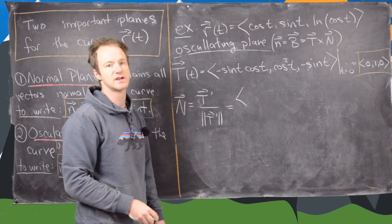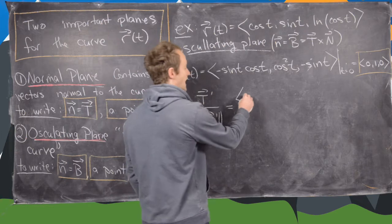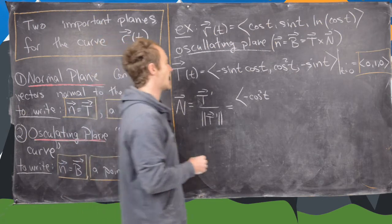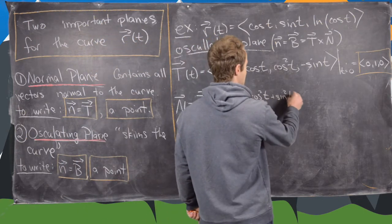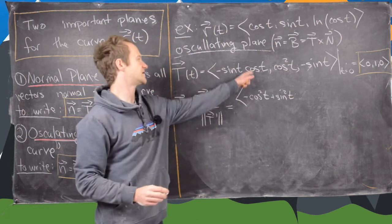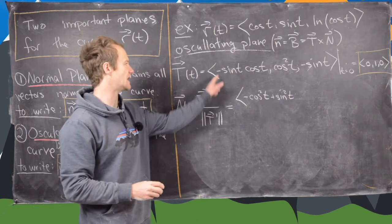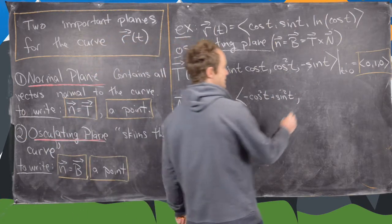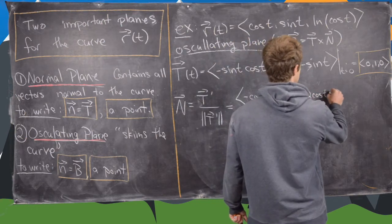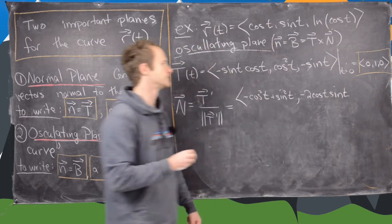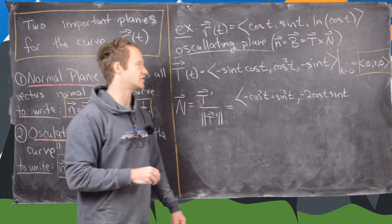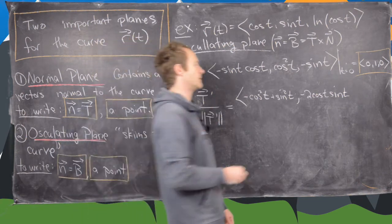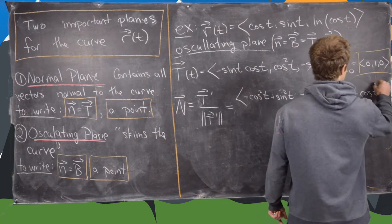Using the product rule on the first component, we get minus cosine squared t plus sine squared t. For the second component, using the chain rule we get negative 2 cosine t times sine t — the minus sign comes from the derivative of cosine being negative sine, and we apply the general power rule. The third component gives minus cosine of t.